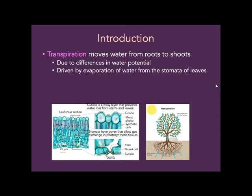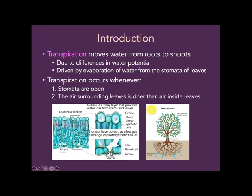Transpiration is the process that moves water from the roots of plants to the shoots. Transpiration is driven by differences in water potential, which we're going to talk about today. It is also driven by evaporation of water from the stomata of leaves. Leaves have holes in them called stomata — stoma singular. Transpiration should occur whenever the stomata are open so that carbon dioxide can be taken in, and whenever the air surrounding the leaves is drier than the air inside of the leaves.